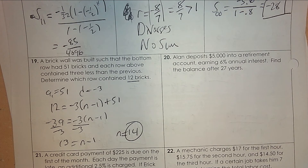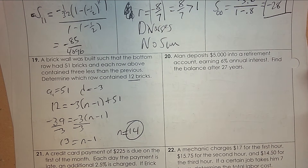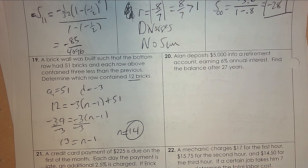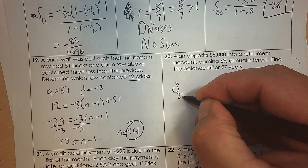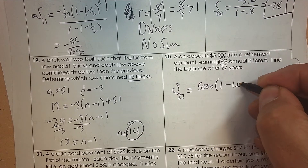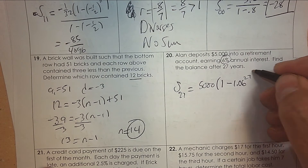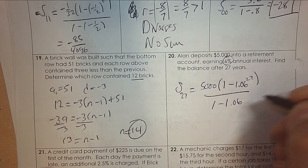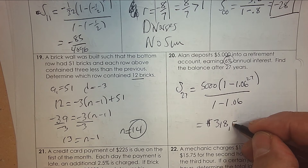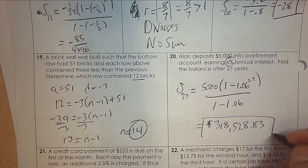Allen deposits five thousand dollars, earning six percent annual interest. Find the balance after twenty-seven years. We can do it like a geometric series. So the sum of the first twenty-seven terms: started with five thousand, times one subtract — six percent is point zero six, but it's increasing, so it's one point zero six to the twenty-seven — divided by one take away one point zero six. The answer is three hundred and eighteen thousand five hundred and twenty-eight dollars and eighty-three cents.